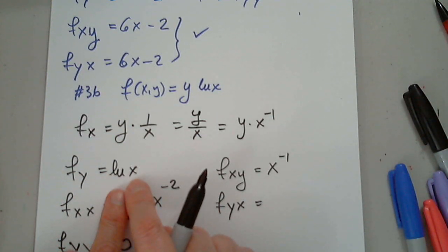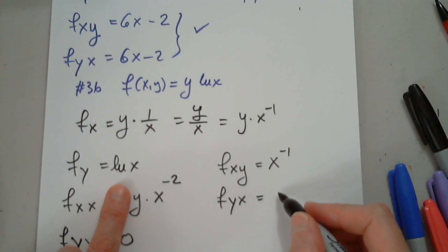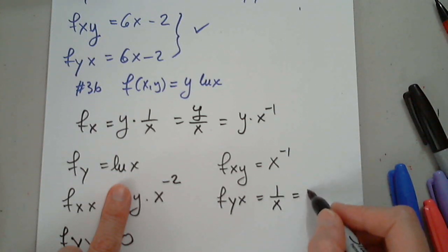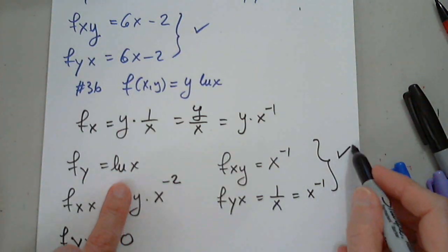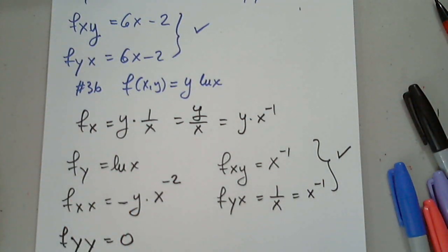We differentiate this with respect to x. x to the negative first. Yes. 1 over x, which is x to negative 1. And they are both the same. Good.